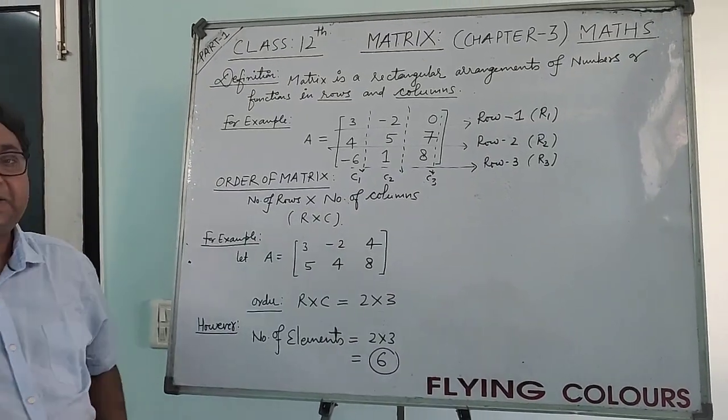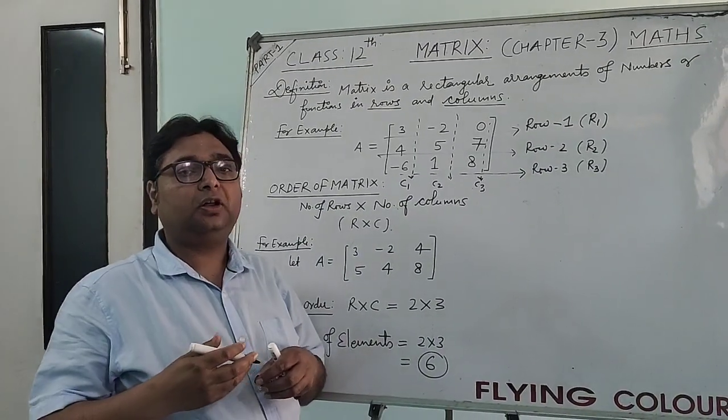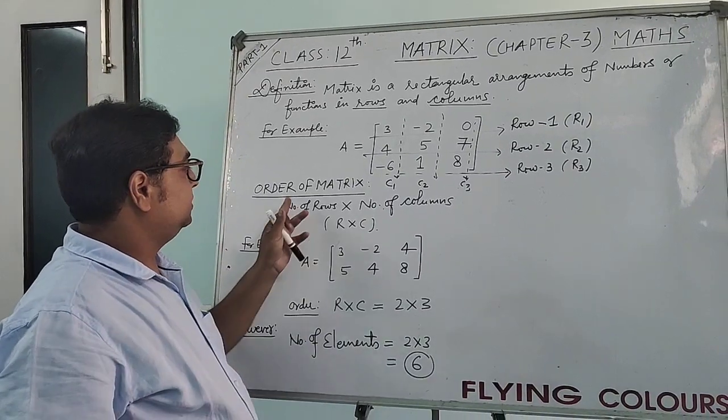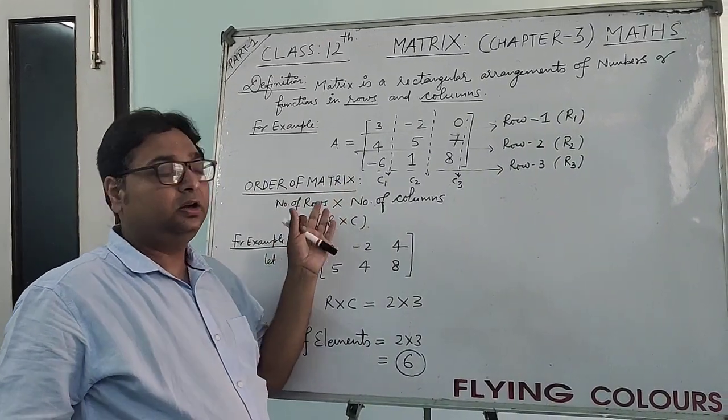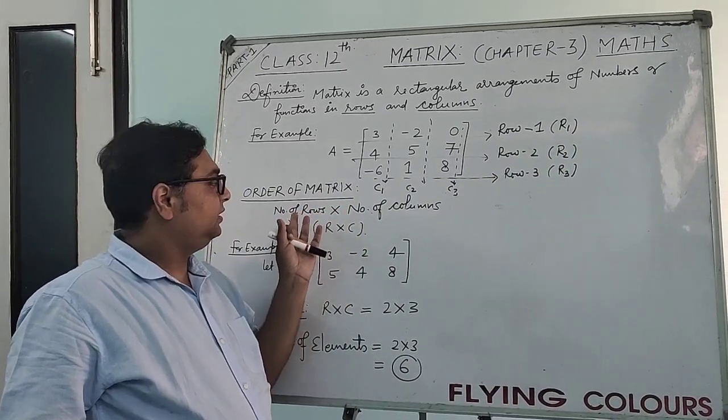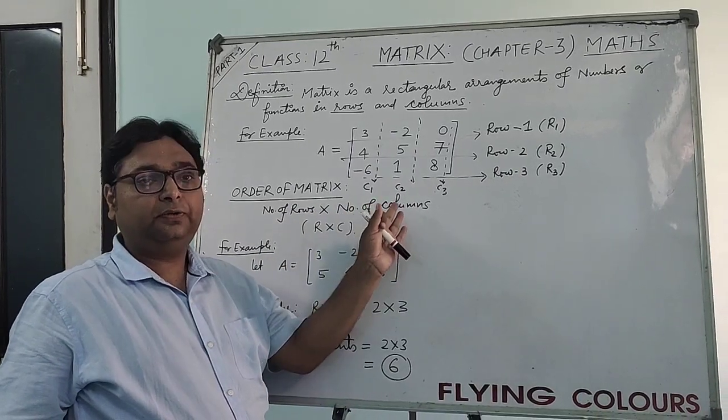Now, coming to the next part, what is order of matrix? So, as you can see here, order of matrix is number of rows into number of columns.